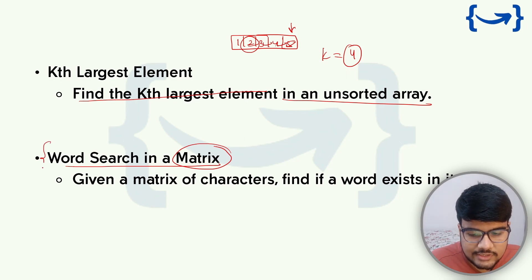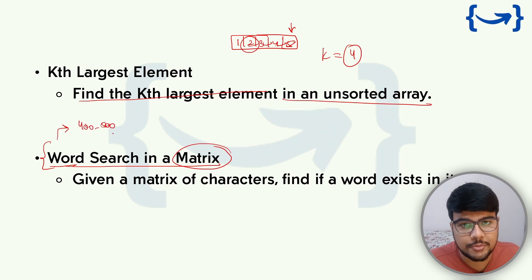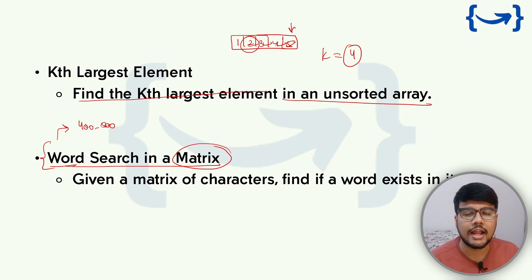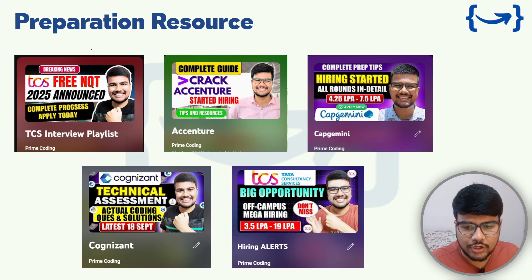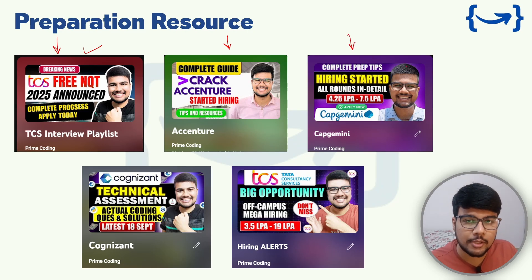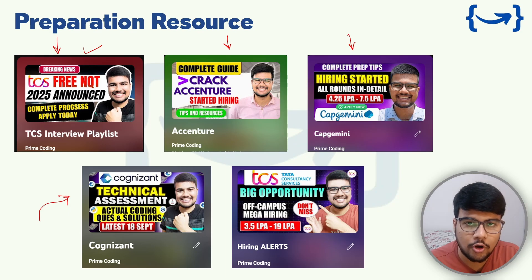If you claim to have solved 550 problems on LeetCode, be prepared for high-level problems like tree questions in your interview — make sure your resume reflects what you can actually deliver. For TCS preparation, a full playlist is ready on the channel. A Cognizant playlist is also available covering communication, coding problems, and SQL problems. The Capgemini and Cognizant TCS sheets are also available on the Telegram group.